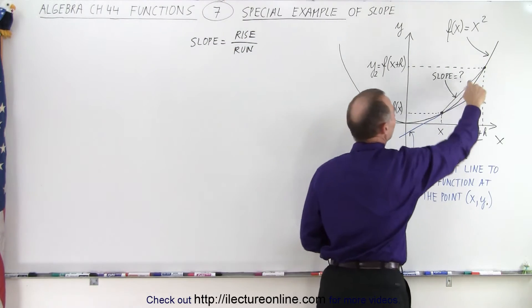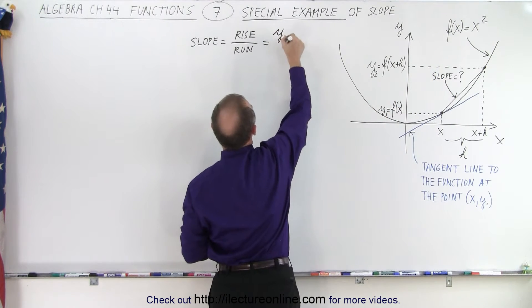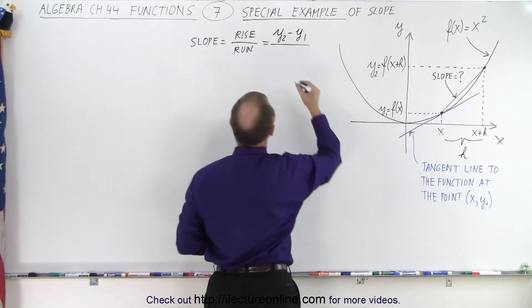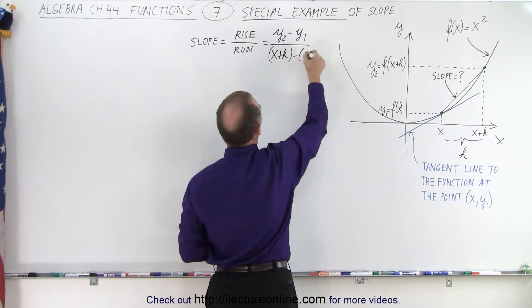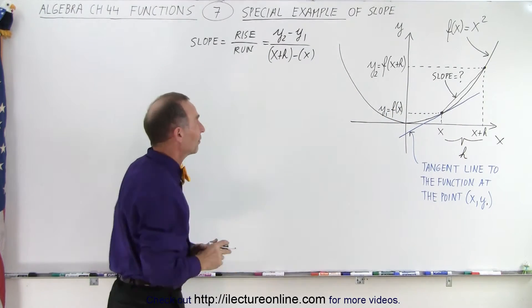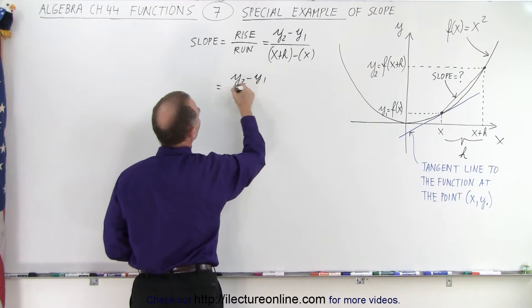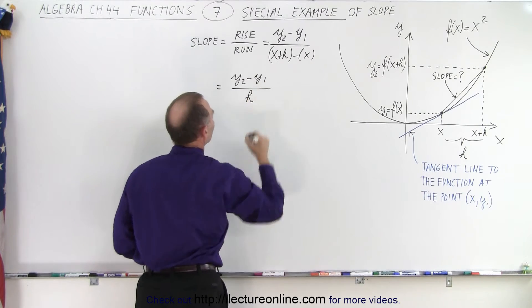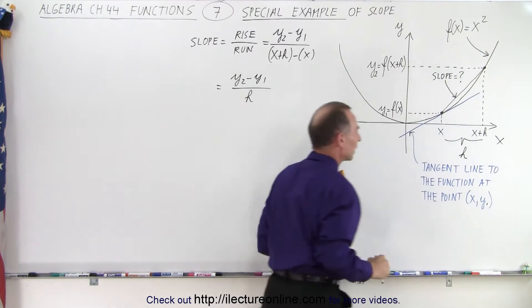What is the rise between those two points? It's the difference between the two y-values. So the rise is y₂ - y₁, and the run is the distance between those two values, which is (x + h) - x. So I take the farthest point, subtract the closest point, at least the x-values of that. So that means that the slope is equal to (y₂ - y₁) divided by, well, x - x, that's 0. All we have left in the denominator is h. And of course, you can see that h is simply this distance right here.